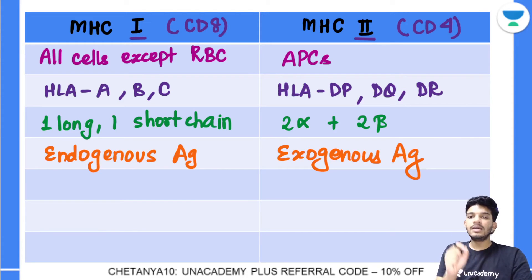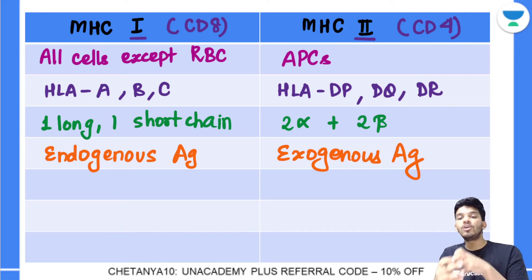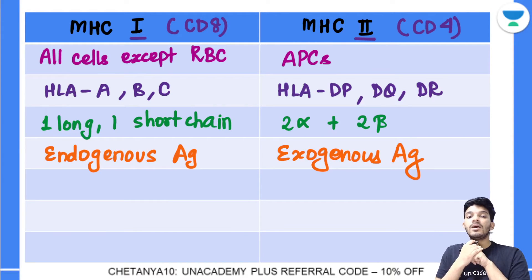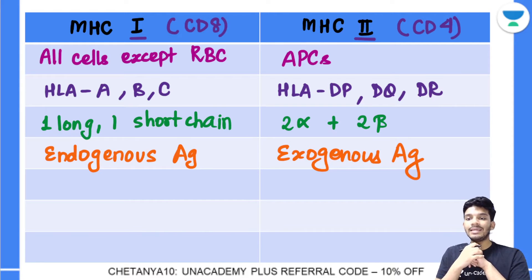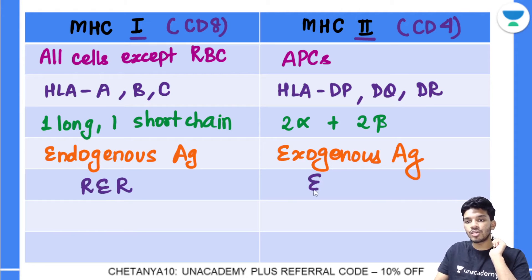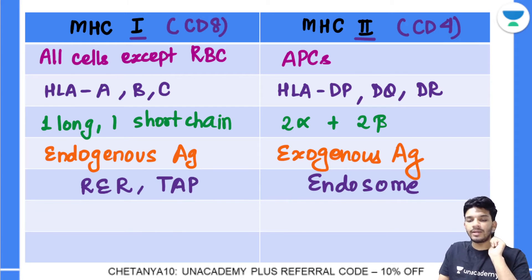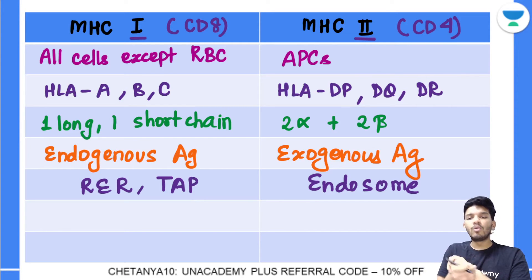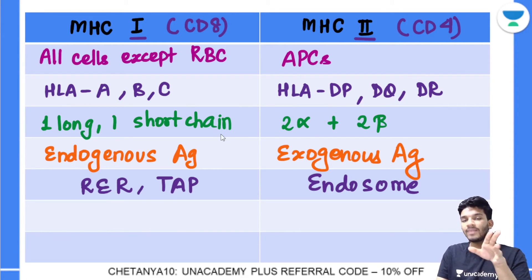Regarding antigen loading: in MHC1, antigens are loaded in the rough endoplasmic reticulum (RER), and there is a protein called TAP — Transporter Associated with Antigen Processing — involved in this process. In MHC2, antigen loading occurs in association with the endosome.